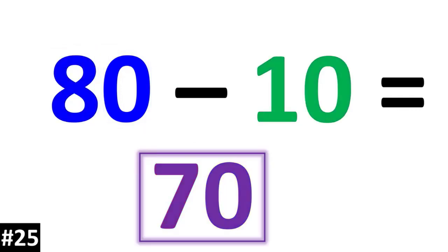So as you can see, we can easily subtract any 2-digit number by 10 by first reducing the tens value by 1, and then by keeping the ones digit the same.